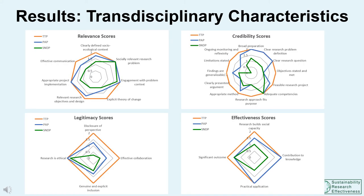These diagrams present the projects' COAF scores, each of which will be explained in more detail. The main takeaway is that the projects had varying transdisciplinary characteristics, but there were strong elements common to all. The scoring highlighted discrepancies between projects' design and implementation that help explain differences in outcomes.